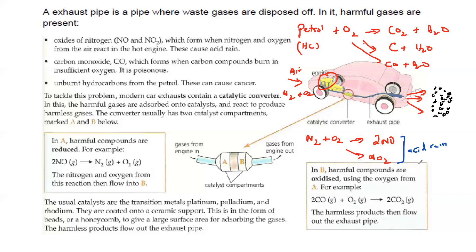Oxides of nitrogen can also cause photochemical smog. When petrol is burned in a limited supply of oxygen, carbon monoxide is produced, and that can cause suffocation and breathing problems. These are harmful gases, harmful for the environment as well as for humans.